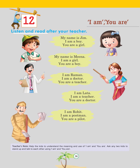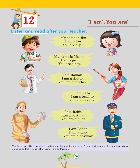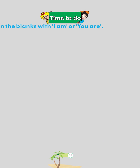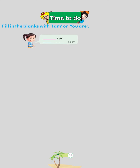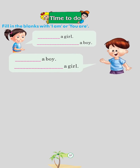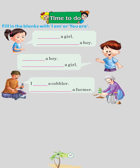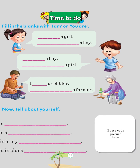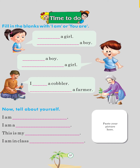I am Rohit — I am a postman, you are a pilot. I am Rohan — I am a pilot, you are a postman. Teacher's note: Help kids understand the meaning and use of 'I am' and 'you are.' Ask two kids to stand up and talk to each other. Time to do. Fill in the blanks with 'I am' or 'you are': I am a girl, you are a boy. I am a boy, you are a girl. I am a cobbler, you are a farmer. Now tell about yourself: I am... I am a... This is my... I am in class...